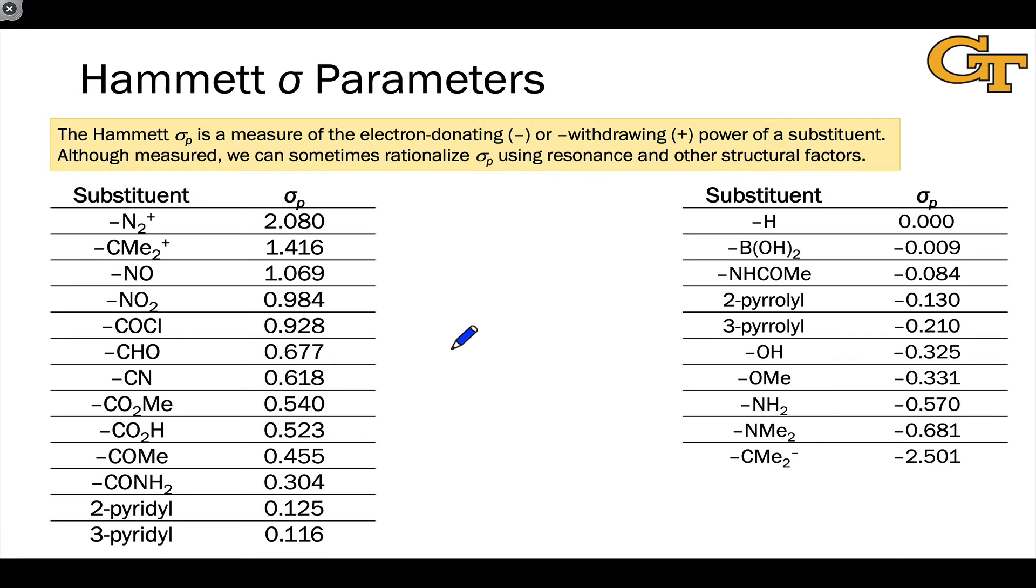First though, I want to survey some Hammett sigma p parameters so that we can really get an intuitive quantitative feel for what sigma is telling us. These tables list sigma p values for many different substituents. On the left, we have substituents that we would understand as electron withdrawing groups, and the strength of the electron withdrawing power is increasing as we move up the table.